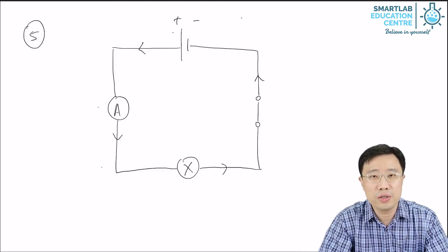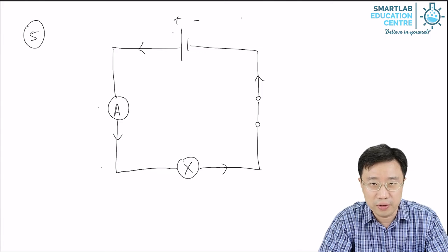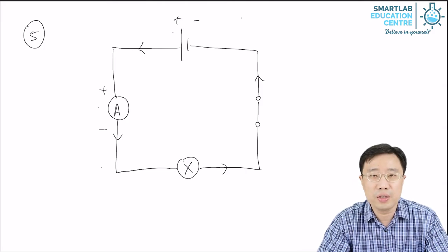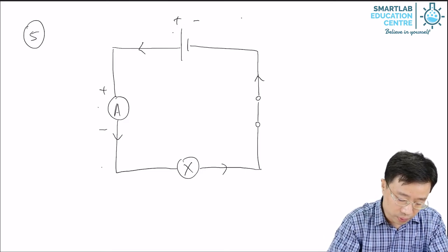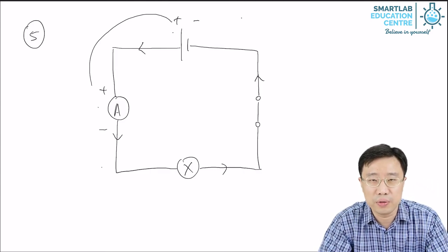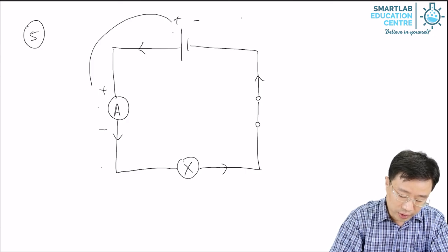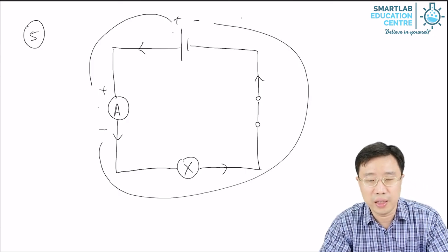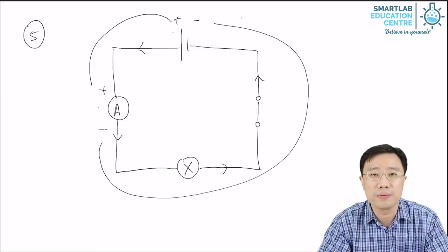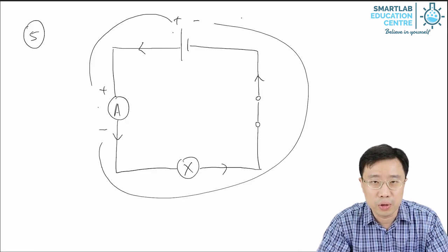If you get a chance to look at the ammeter, you will discover that there is a positive terminal and there is a negative terminal — there are two terminals of the ammeter. So how do you connect the ammeter? As seen in the diagram, you connect the positive terminal of the ammeter to the positive terminal of the electric cell, and you connect the negative terminal of the ammeter to the negative terminal of the electric cell. This is how you are supposed to connect an ammeter, and this arrangement will allow you to measure the current that flows out from the electric cell.